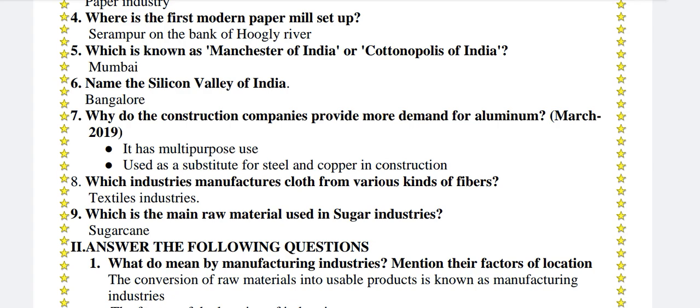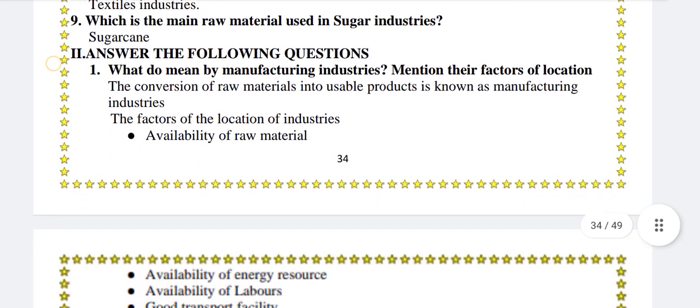Why do the construction companies provide more demand for aluminium? It has multi-purpose use, used as a substitute for steel and copper in construction. Which industry manufactures cloth from various kinds of fibres? Textiles industries. Which is the main raw material used in sugar industries? Sugarcane.